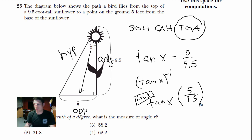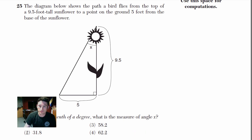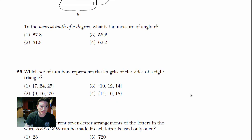Second, tan, 5 over 9.5, hit equal. So basically, you're asking the calculator to find the angle whose tangent is 5 over 9.5, whatever that equals. And when you do that, you get 27.8. That's choice one. Okay? So practice getting good at labeling your triangles and knowing which side is which. It's not that bad once you practice it. Okay. Number 26.